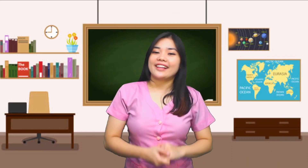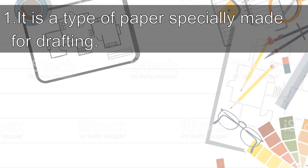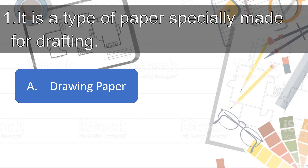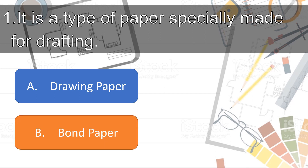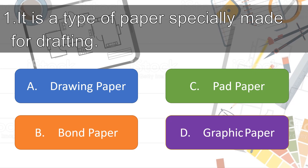Now, to test your understanding of the uses of the different hand tools and equipment, let us try to answer this quiz game. Identify what tool or equipment is introduced in each given statement and choose the letter of the correct answer. Number 1: It is a type of paper specially made for drafting. Letter A — Drawing Paper, Letter B — Bond Paper, Letter C — Pad Paper, or Letter D — Graphic Paper. Very good! It's Letter A, Drawing Paper.